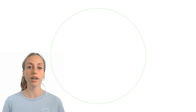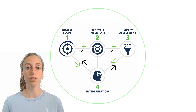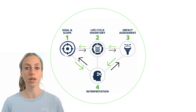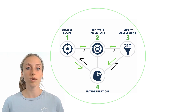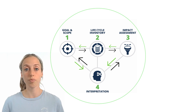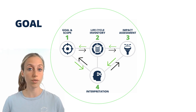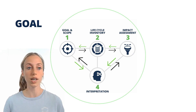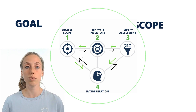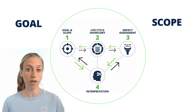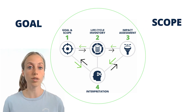A flowchart is a very important part of the first phase of your LCA, which is the goal and scope phase. In your goal and scope phase, you determine what the goal is of your LCA — so what you want to achieve with it — and also what the scope is, so how you're going to achieve this goal.